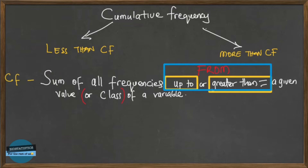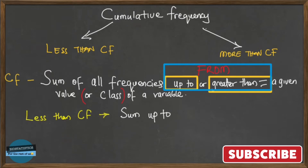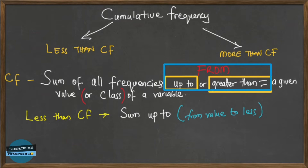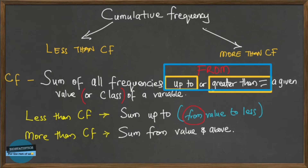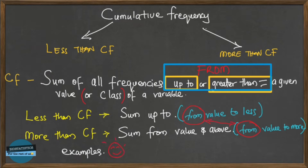When we say less-than cumulative frequency, we're talking about the sum of all frequencies from a particular value down to all frequencies less than that value — that's why it's called less-than cumulative frequency. For more-than cumulative frequency, we're talking about the sum of all frequencies from that value and the frequencies above it. Note that key word: 'from.'